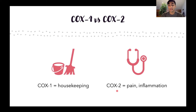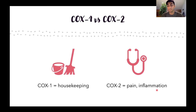COX-2, on the other hand, is not on all the time, but it's readily inducible by things like stress or cytokines, which are inflammatory molecules. The prostaglandins produced from the COX-2 pathway play a role in things like pain and inflammation. So when we think about targets for medication, the COX-2 pathway is generally what we want to focus on because of its role in pain and inflammation.